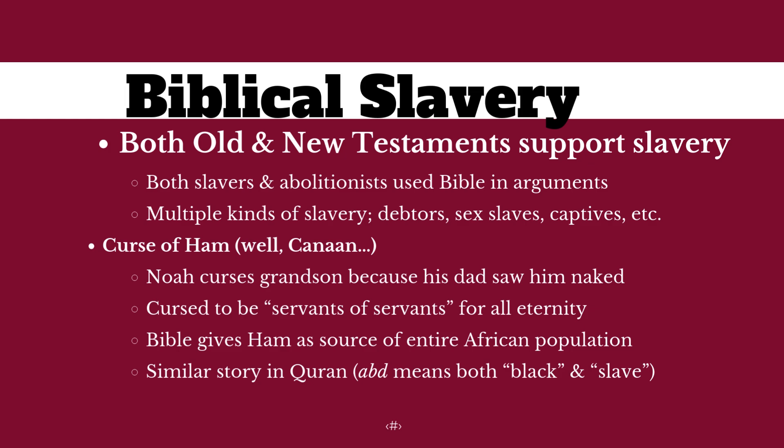The Bible also has multiple kinds of slavery that don't necessarily exist after the biblical period, like debt slaves, sex slaves, and war captives as we see in the Greco-Roman model. The Bible also has the very problematic history of Noah, his son Ham, and his grandson Canaan, which is going to be used once we get to the early modern period to excuse treating Africans as subhuman automatic slaves.